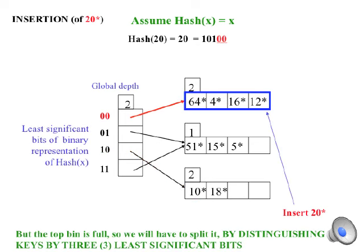Now if we want to insert 20, you can verify that this hashes to 0, 0 and the top bin. But this bin is full. What do we do?